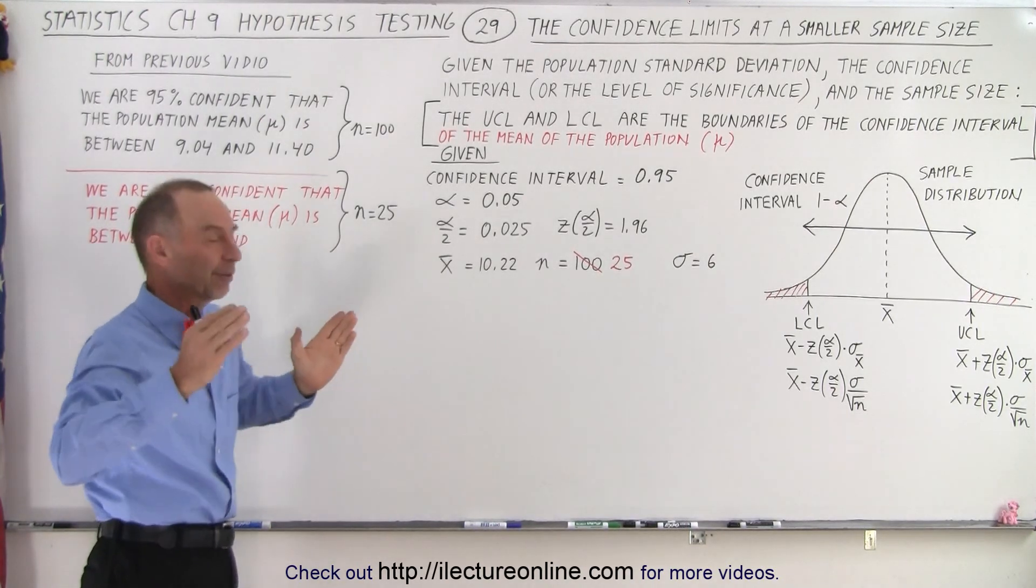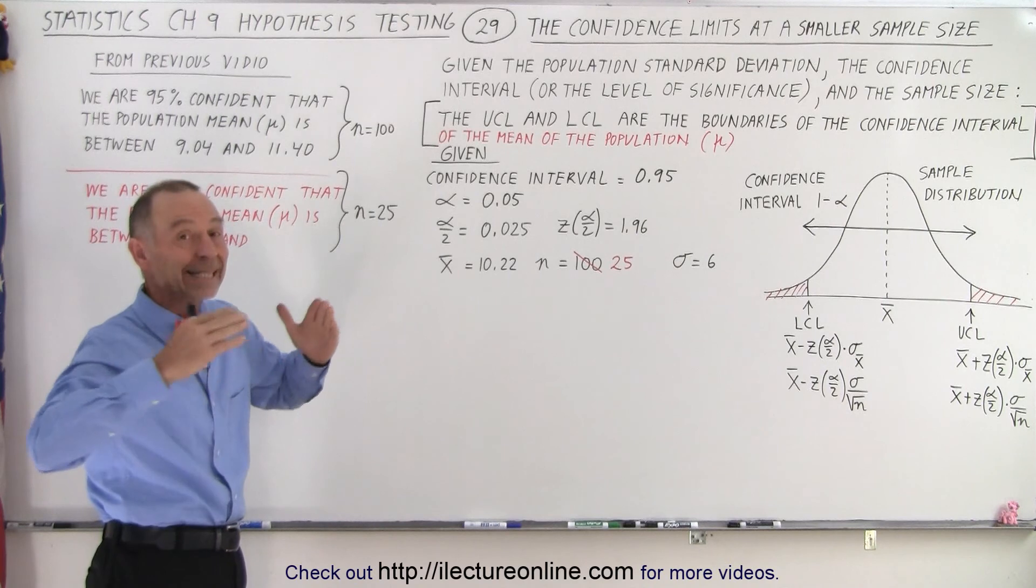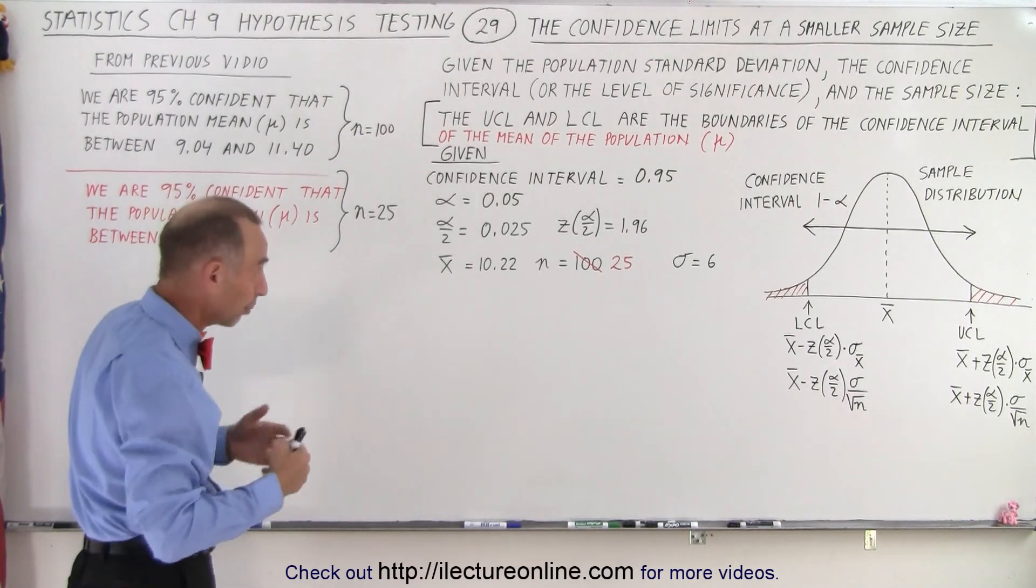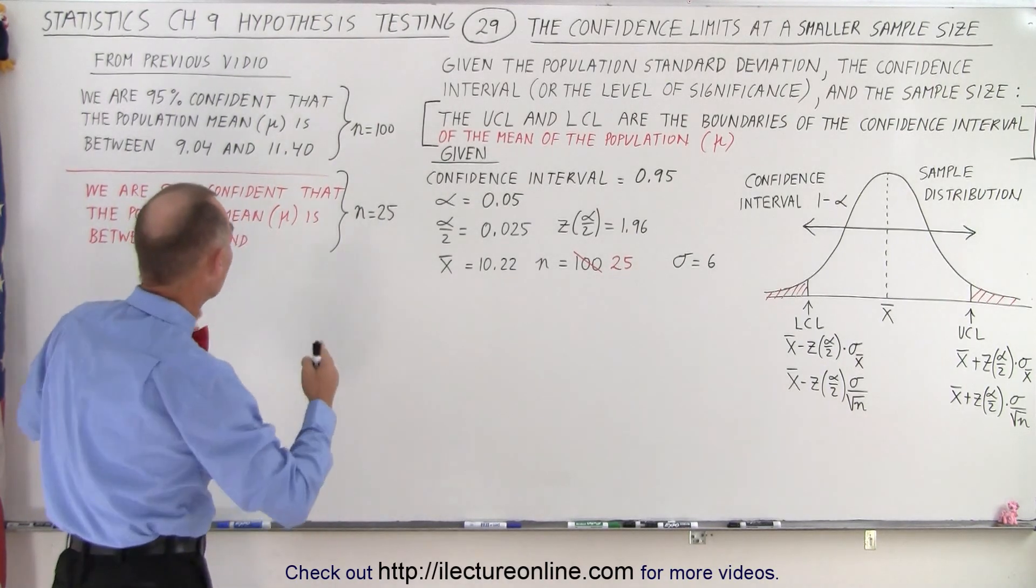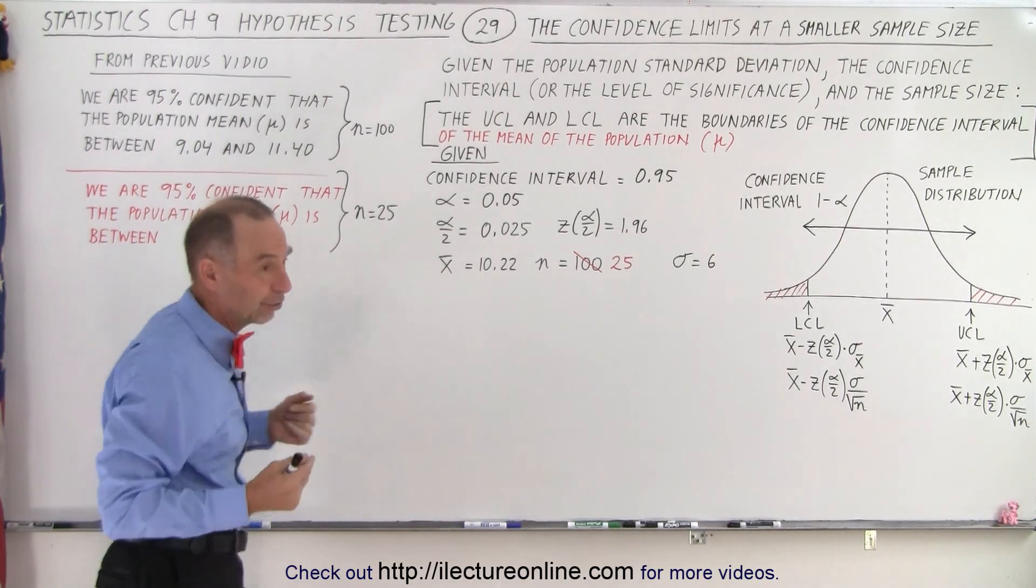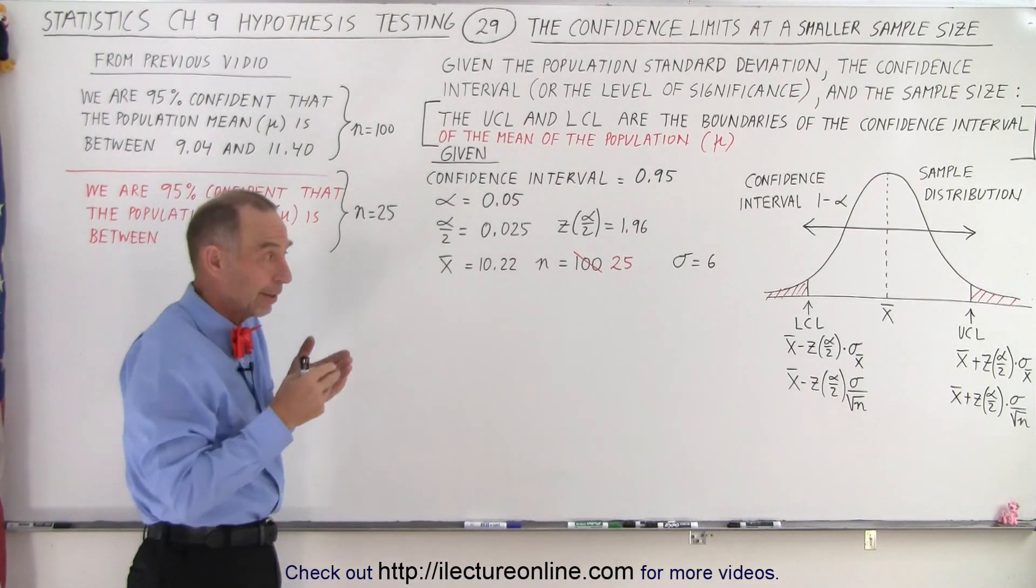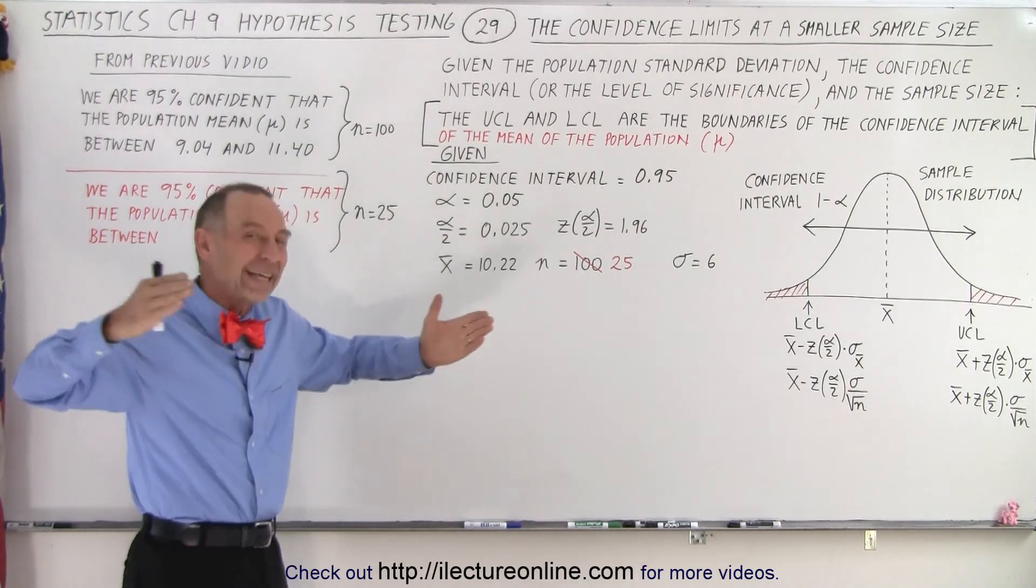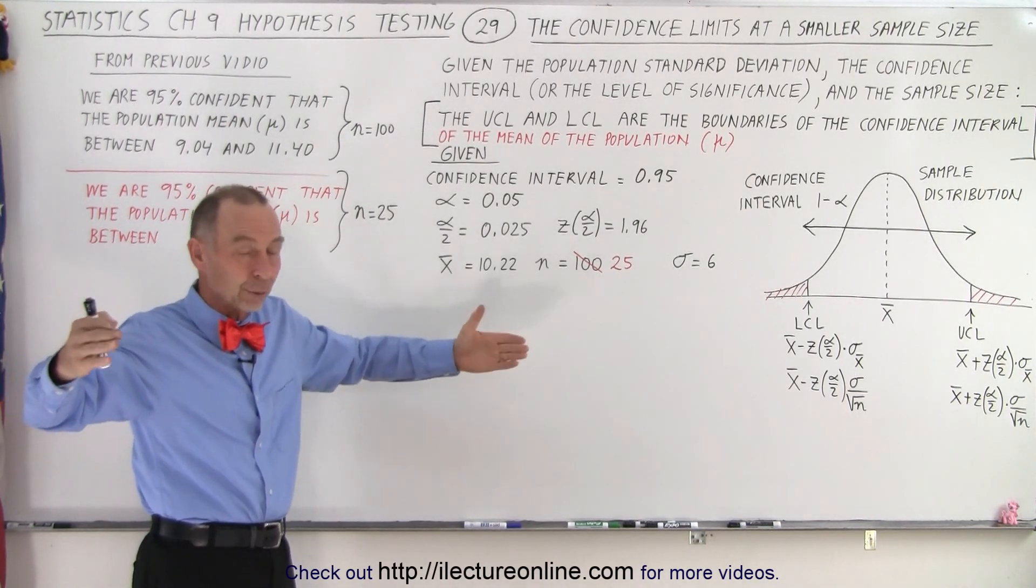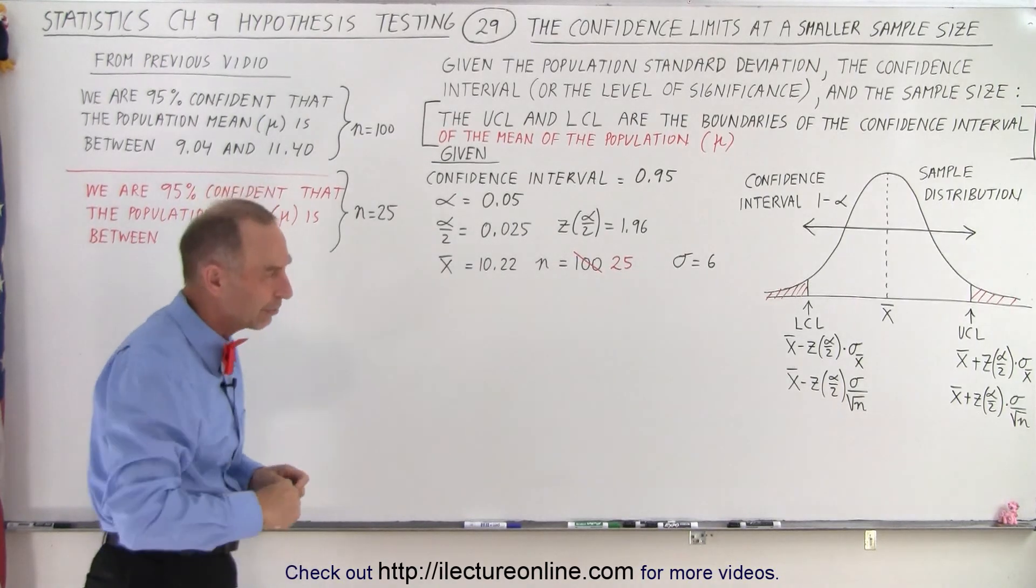Then we wanted to have a greater level of confidence. We increased it to 99 percent or 0.99, and that caused the limits to shift. To be that sure that the mean of the population falls within a certain range, we have to increase those limits to allow for that greater level of confidence.